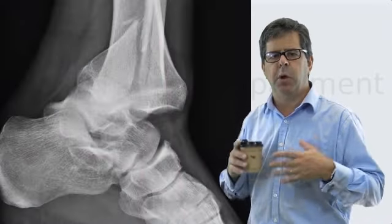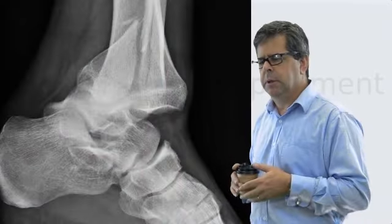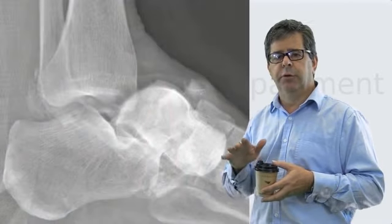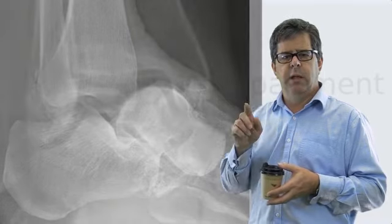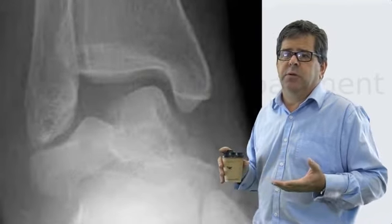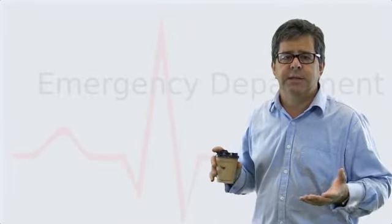So if the talus moves posteriorly, it's a posterior dislocation of the ankle. There's anterior—an anterior dislocation. It can actually also go superiorly between the tibia and the fibula. This is unusual and often occurs either with a motor vehicle accident, a motorbike accident, or perhaps if you jumped off a building, which I wouldn't suggest.